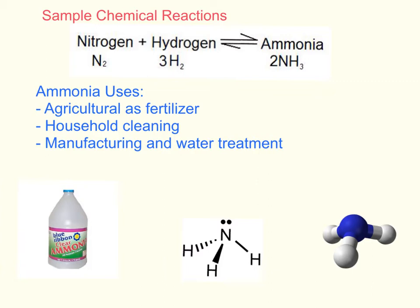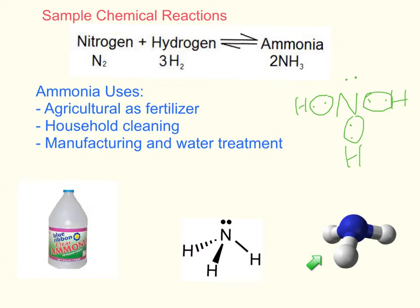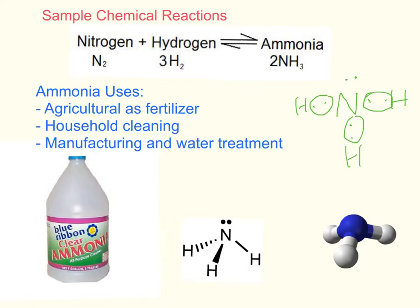Now let's look at the bonding diagram for ammonia. Nitrogen has a non-bonding pair of electrons and three unpaired electrons, so nitrogen bonds with three different hydrogen atoms since each hydrogen atom has just one electron — giving a single bond to each hydrogen. This bonding diagram is also represented as a ball-and-stick figure of ammonia. Ammonia solution is used for household cleaning, in the agricultural industry as fertilizer, and in manufacturing and water treatment plants.